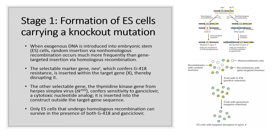Knockout mice, in which a specific gene is disrupted, are a powerful experimental system for studying mammalian development, behavior, and physiology. They also are useful in studying the molecular basis of certain human genetic diseases. Gene-targeted knockout mice are generated by a two-stage procedure.